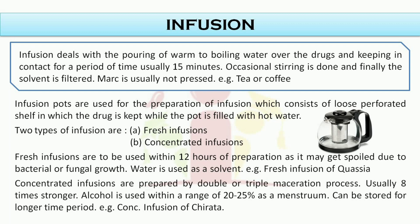Concentrated infusions, on the other hand, are prepared by a double or triple maceration process. They are usually 8 times stronger. Alcohol is used within a range of 20–25%, and they can be stored for a longer period of time. For example, infusion of Chirotam.